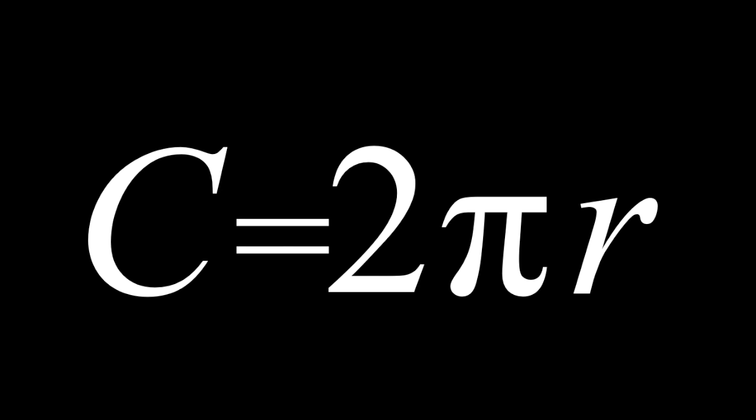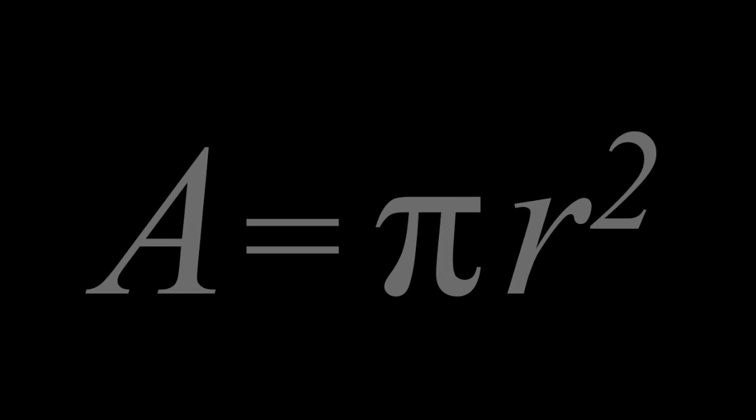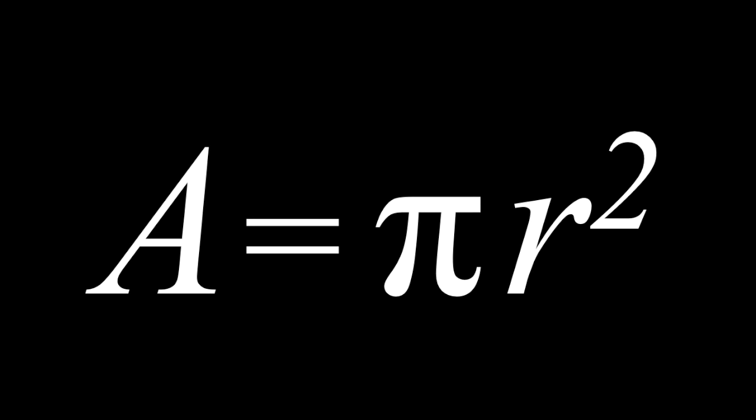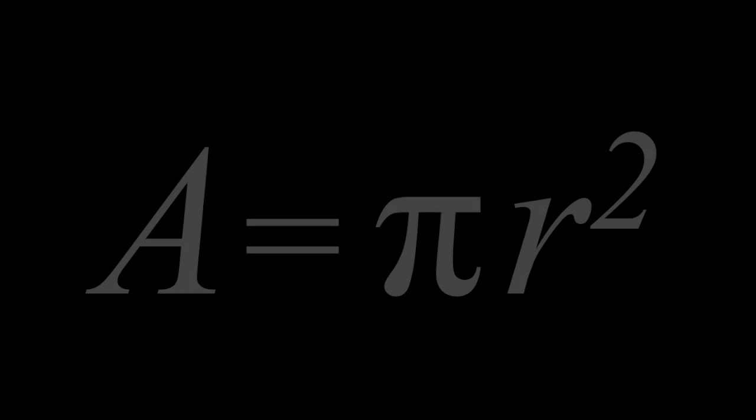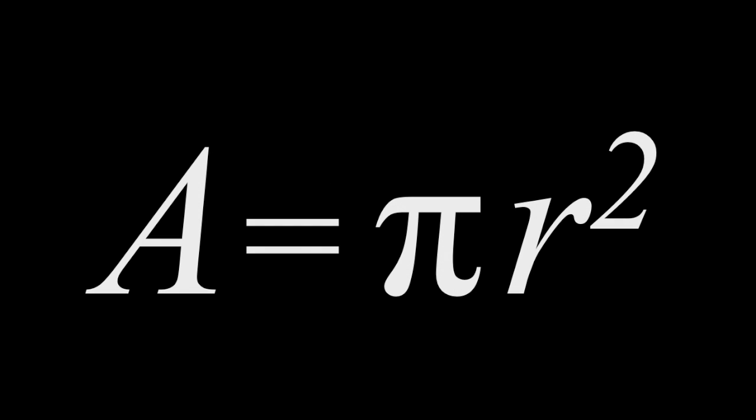Two times pi times r is circumference. And pi times r squared is the area. Two times pi times r is circumference. And pi times r squared is the area.